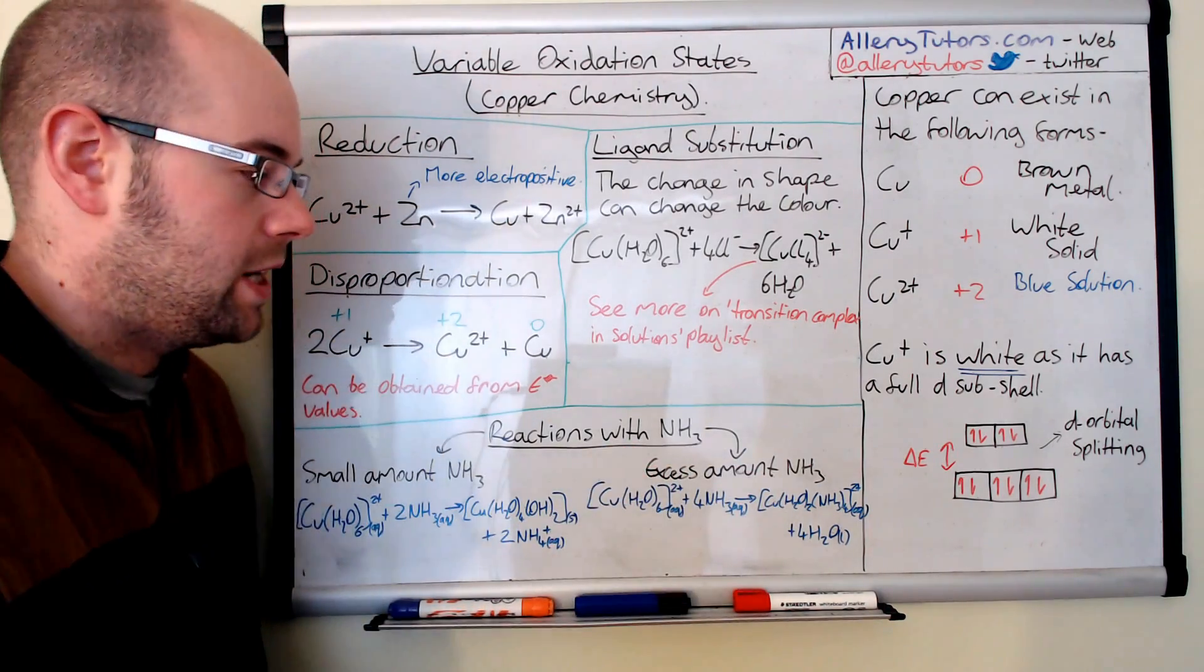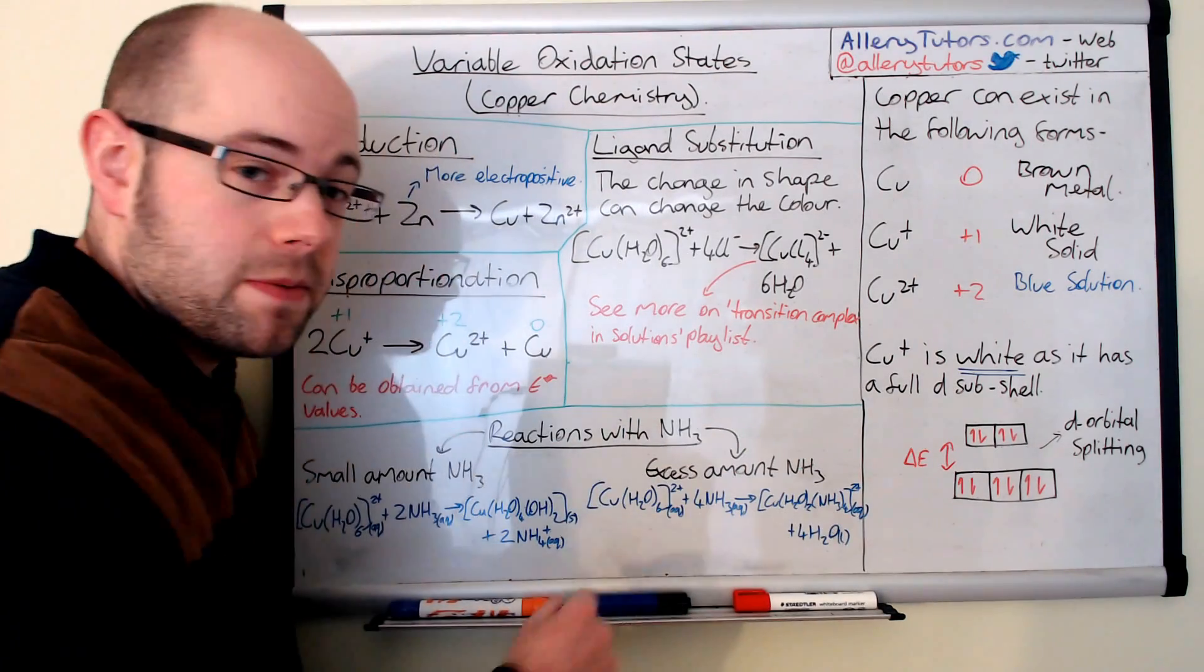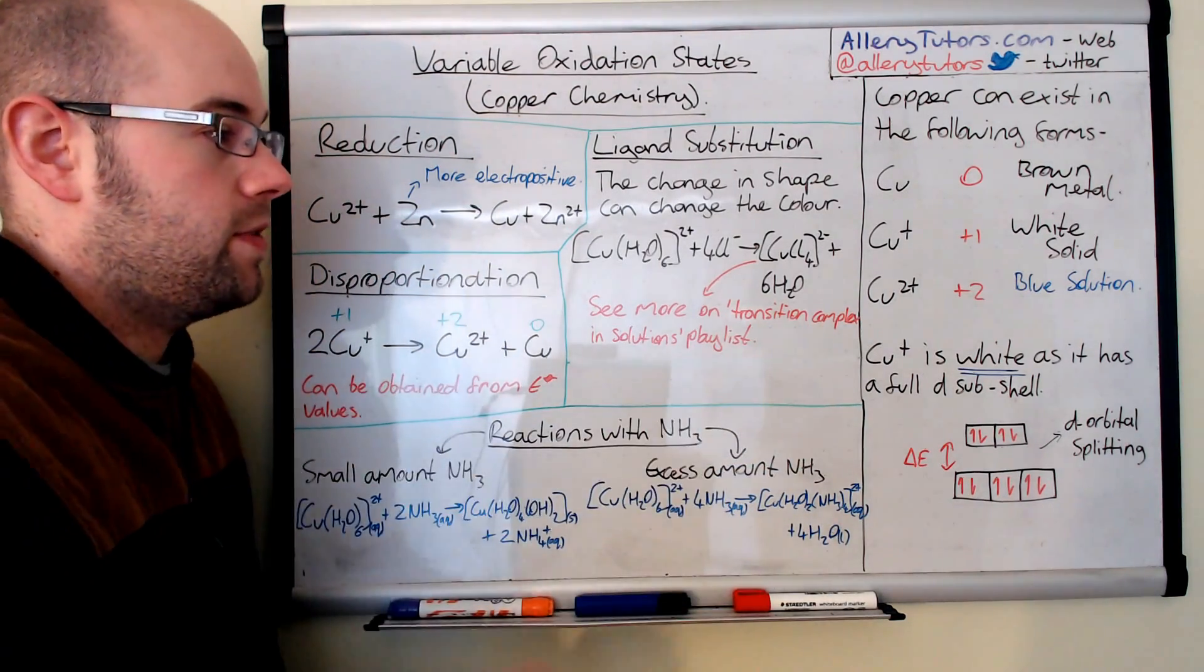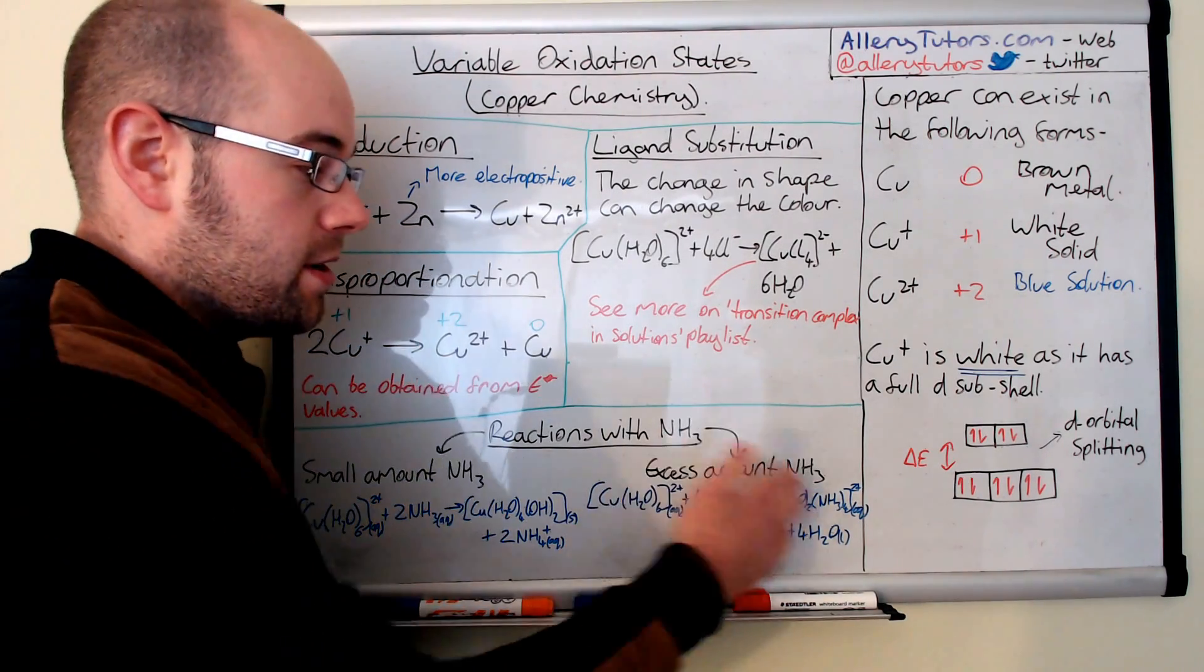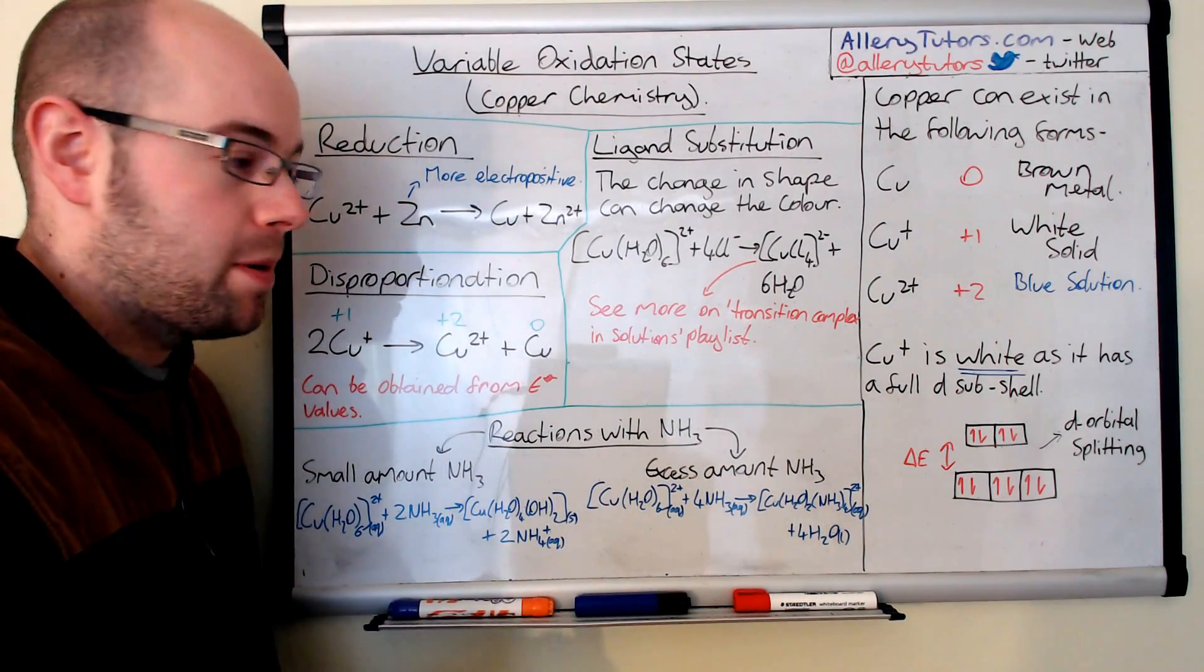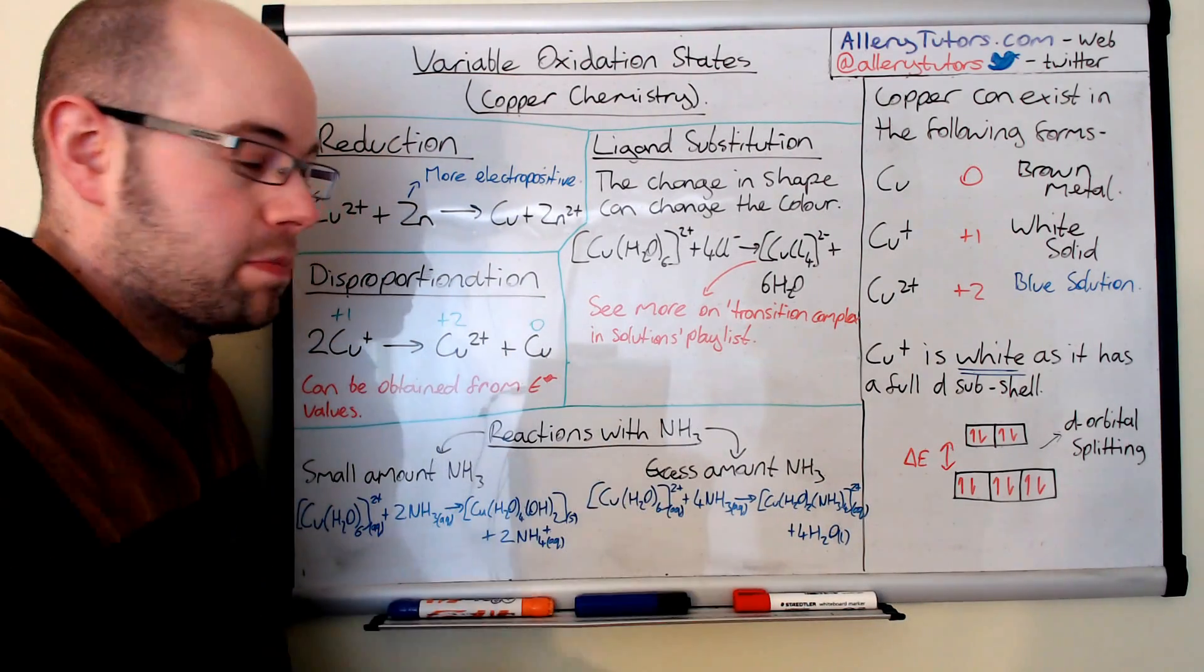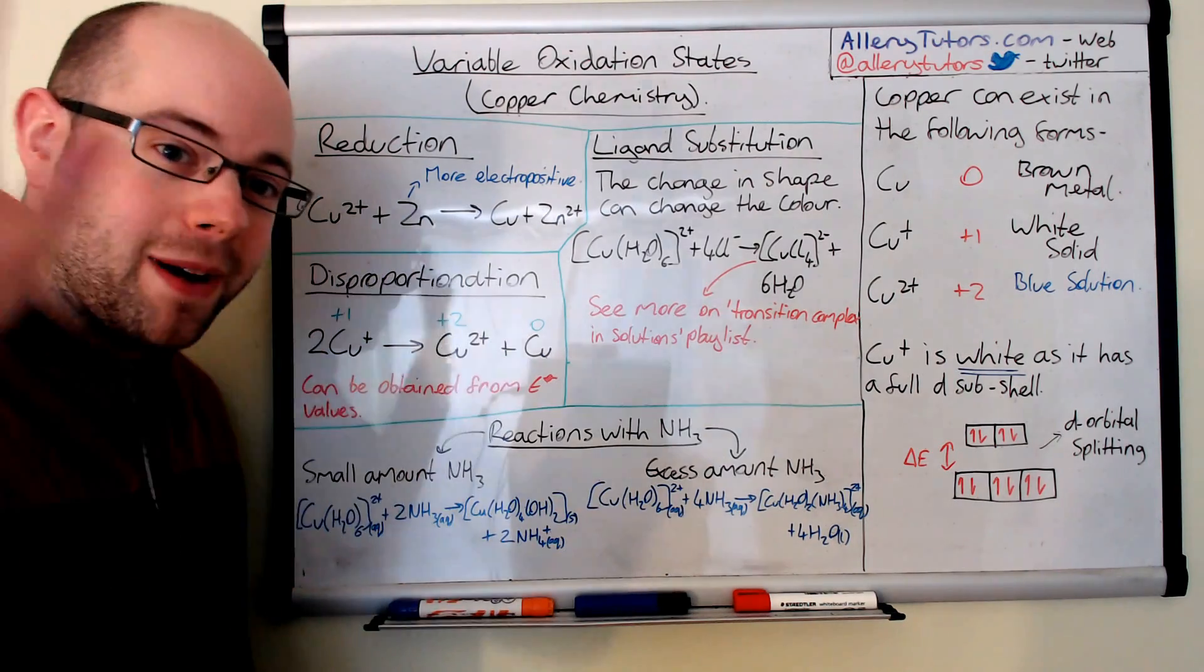This is a deep blue coloured solution, whereas this one is like a pale blue. So it's like a really royal blue, really deep blue. And again, the mechanism for this goes into a lot more detail on the transition complex and solutions playlist. You can find a little bit more detail about why only four waters are actually kicked off as opposed to all six. But that's it. Hope that helps. Bye.